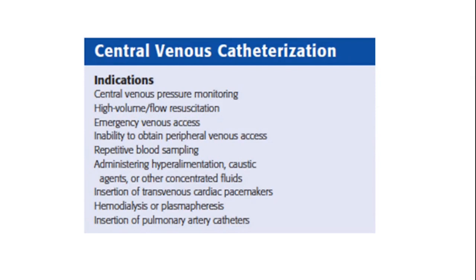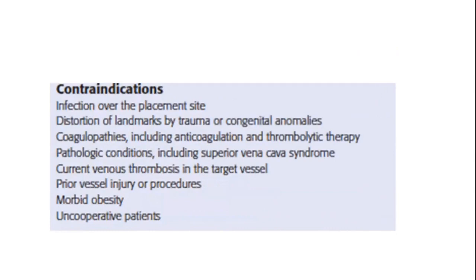When thinking of indications, we must also think of contraindications. Probably the most important is having an alternative. The list also includes: infection over the insertion site; distortion of landmarks by trauma or other abnormalities; coagulopathy — always remember if the patient is coagulopathic or has received recent anticoagulation or thrombolytic therapy; superior vena cava syndrome; thrombosis in the vein itself; prior injury to the vessel; morbid obesity; and an uncooperative patient.